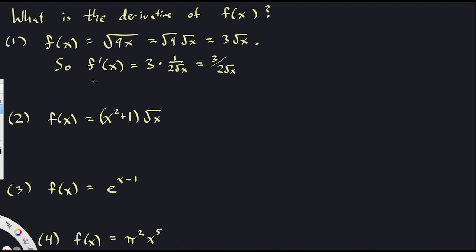Some of you might prefer rational exponents. 3√x can also be written as 3 times x to the 1/2. So using the power rule: 3 · (1/2) · x^(1/2 - 1) = (3/2) x^(-1/2). Both 3/(2√x) and (3/2)x^(-1/2) are common ways of writing the same thing. The lesson: when you see a derivative question, sometimes it's better to slow down, rethink what the function is, re-express it algebraically, and then go for the derivative.